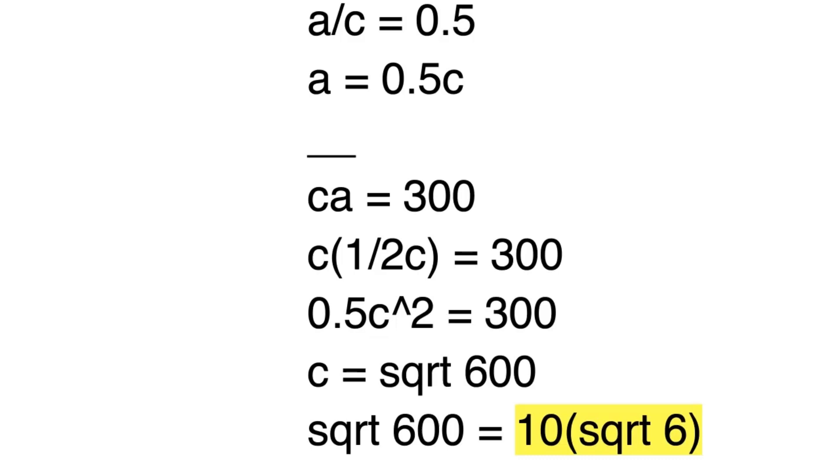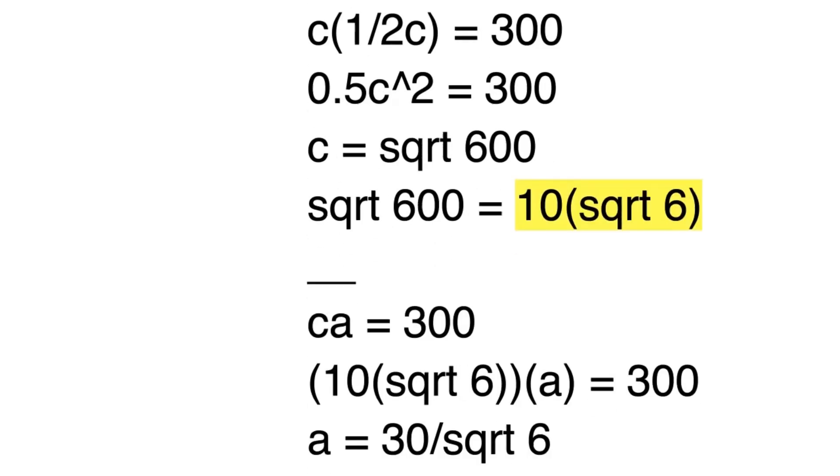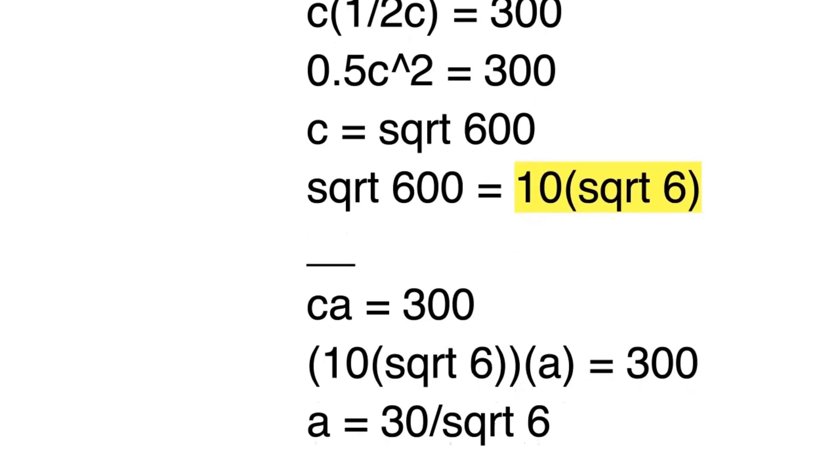Okay, so we have the value of C now, and since we know the value of A, we can find that using CA equals 300 if we have a numerical value for C. So if we have CA equals 300, we know the value of C. Plug it in. 10 times square root 6 times A equals 300.